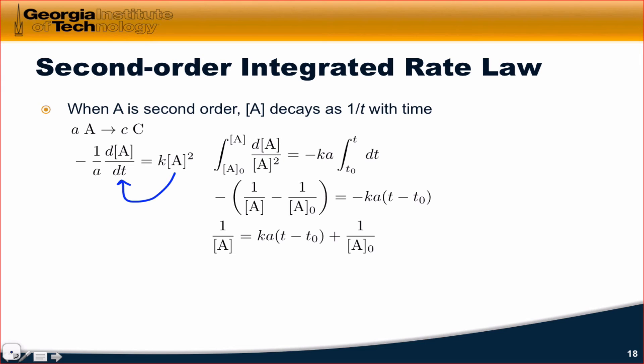times the integral between T and T0 of DT. The integral of 1 over X squared DX is equal to negative 1 over X plus C, and so this definite integral with A0 as the lower limit comes out to negative 1 over A minus 1 over A0, and that's equal to the usual expression on the right, which is minus KA T minus T0. Doing a little bit of rearranging, we find that 1 over A is equal to KA T minus T0 plus 1 over A0.